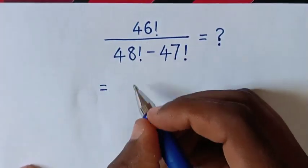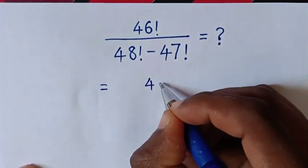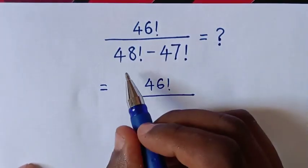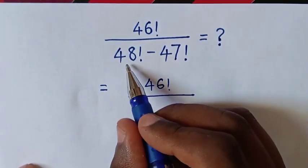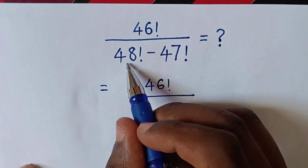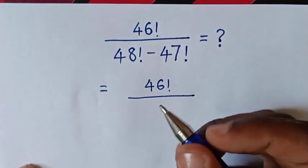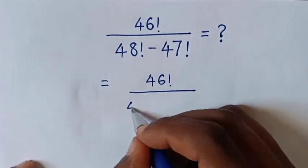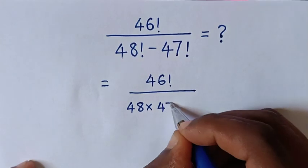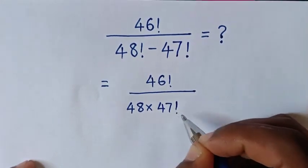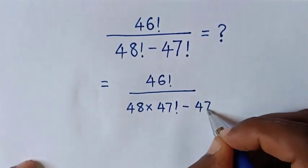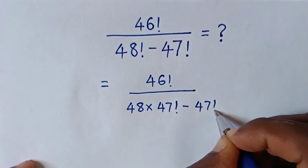So this is equal to 46 factorial over 48 factorial. To factor out 47 factorial, this 48 factorial is the same as 48 times 47 factorial, then minus this 47 factorial.